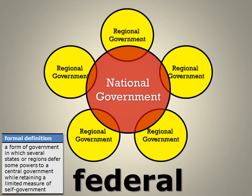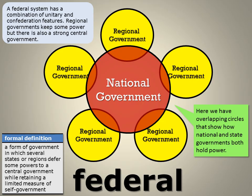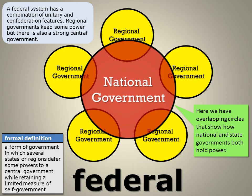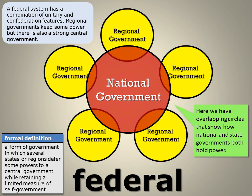Our third system of power distribution is a federal system, which is a form of government in which several states or regions defer some powers to a central government while retaining a limited measure of self-government. Basically, a federal system has a combination of both unitary and confederation features. Regional governments keep some power, but there's also a strong central government that holds all of them together. In this illustration we show overlapping circles of power that show how both national government and state governments hold power, and they actually overlap in power as well.